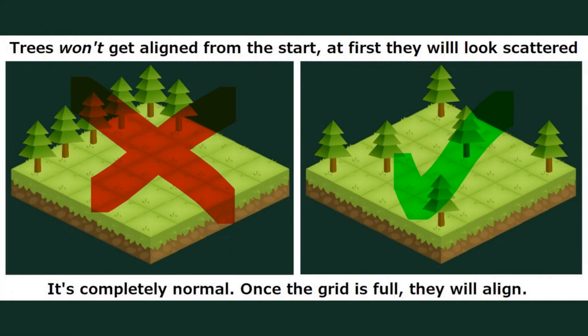Do not panic if the first trees don't show up in a line since the beginning — it's normal. Trees will always look scattered until you fill the entire plot of land.